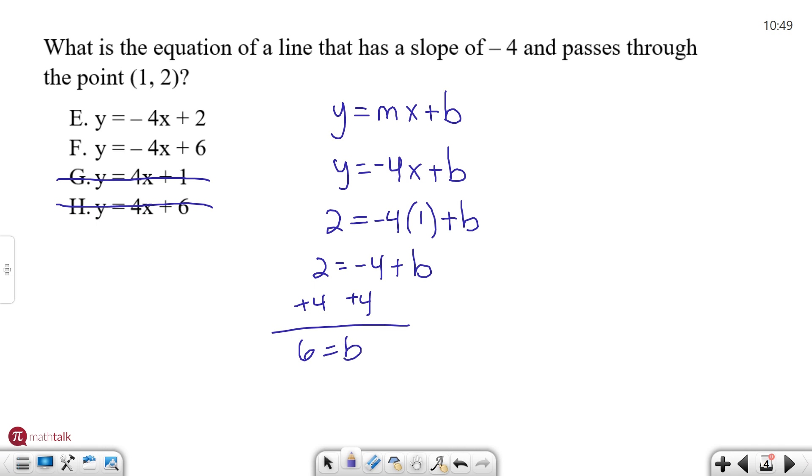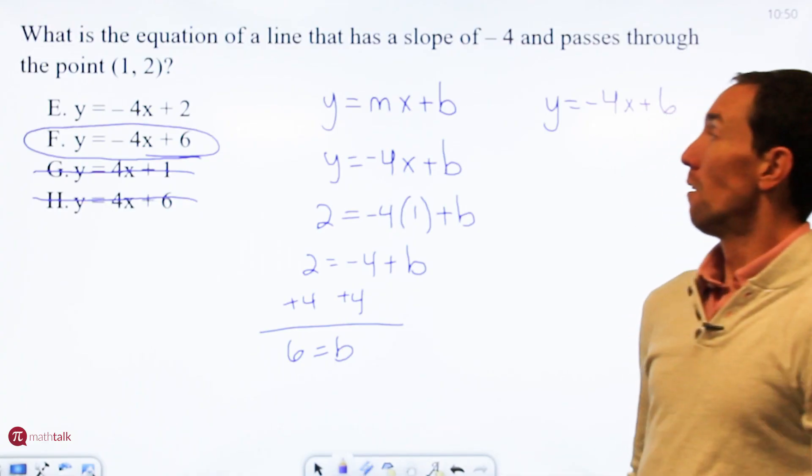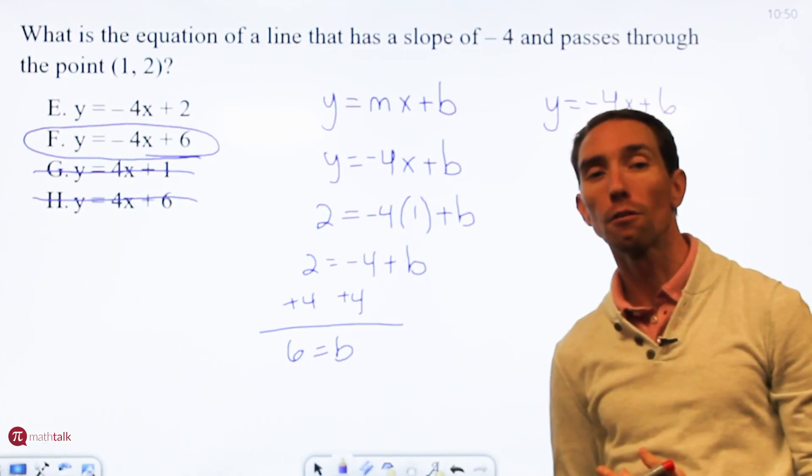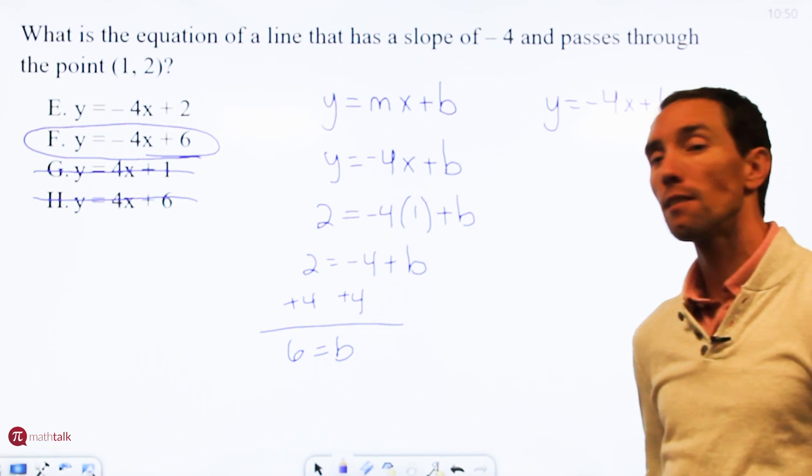Now I have all the pieces in my equation. I can put it all together to figure out that y = -4x + 6. I need to find the answer to that which is in this case option F. So I hope this helps as you go through some expressions and inequalities and equations.